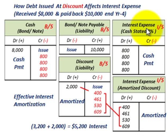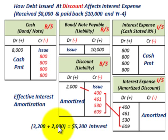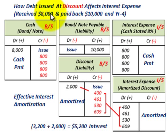This is the same as before with the cash stated rate of interest — the 8% cash payments of $800 per year. But on top of that, we add the interest expense for the amortized discount amount. So in this case, we have a greater overall effective interest expense: the $3,200 cash payments plus the $2,000 amortized amount gives a total effective interest expense of $5,200. This increase in interest expense is because we received only $8,000 but must pay back $10,000 in the future.